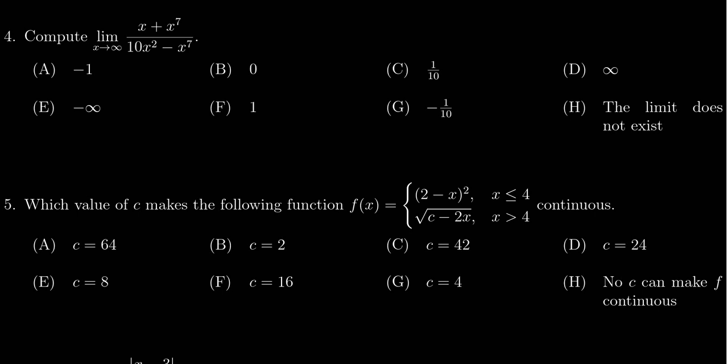In this video we present the solution to question number 4 from practice exam number 2 from Math 1210, in which we're asked to compute the limit as x approaches infinity of the rational function x plus x to the 7th over 10x squared minus x to the 7th.